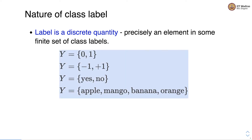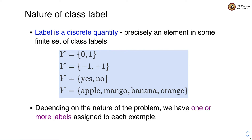Let's look at some examples of class label sets. The first one has two elements, 0 and 1. The second has elements minus 1 and plus 1. The third has elements yes and no. The fourth has more than two elements, which are the names of fruits. Depending on the nature of the problem, we have one or more labels assigned to each example.